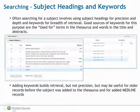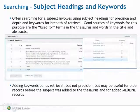While doing a search, observe the synonyms in the thesaurus displays, and when viewing your first results look for synonyms in the author's own words. Often additional keyword searches build retrieval but not precision, but they may be useful for older records before the subject became part of the thesaurus. Look at the scope note for details and for added MEDLINE records which may differ in their indexing.